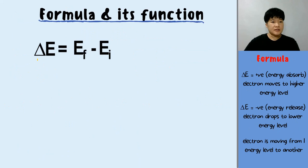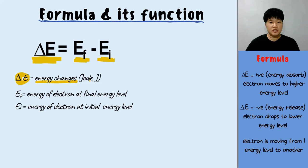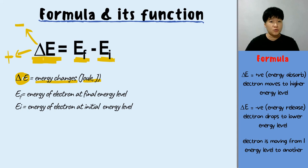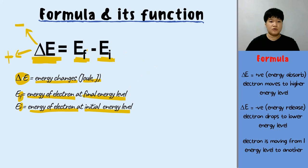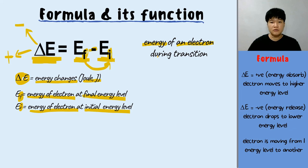The next formula is delta E equals E final minus E initial — no energy level N is shown, everything is in terms of energy. Delta E is the energy change in joules, and can be negative or positive depending on whether the electron moves to a higher or lower energy level. EF is the energy at the final energy level and EI is the energy at the initial energy level. It must be final minus initial.